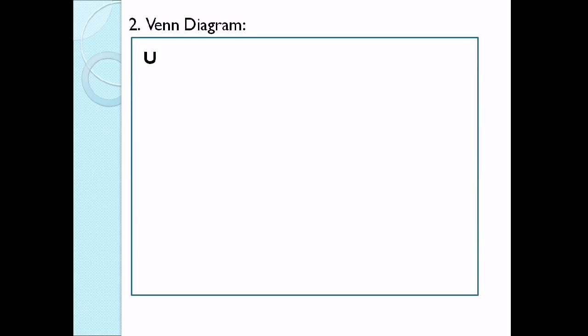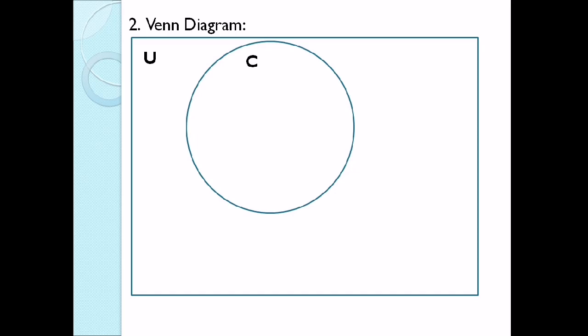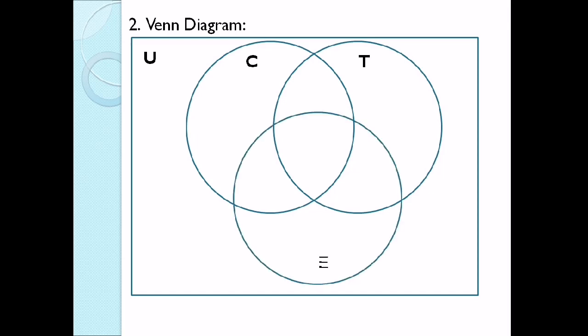So ngayon, gagawa tayo ng Venn diagram. So we have the rectangle, so that will serve as our universal set. And then yung ating first circle, dinote natin siya as C for Coron. And then our next circle na nag-overlap dun sa C, T for Tubbataha. And then for our last circle ay letter E for El Nido.